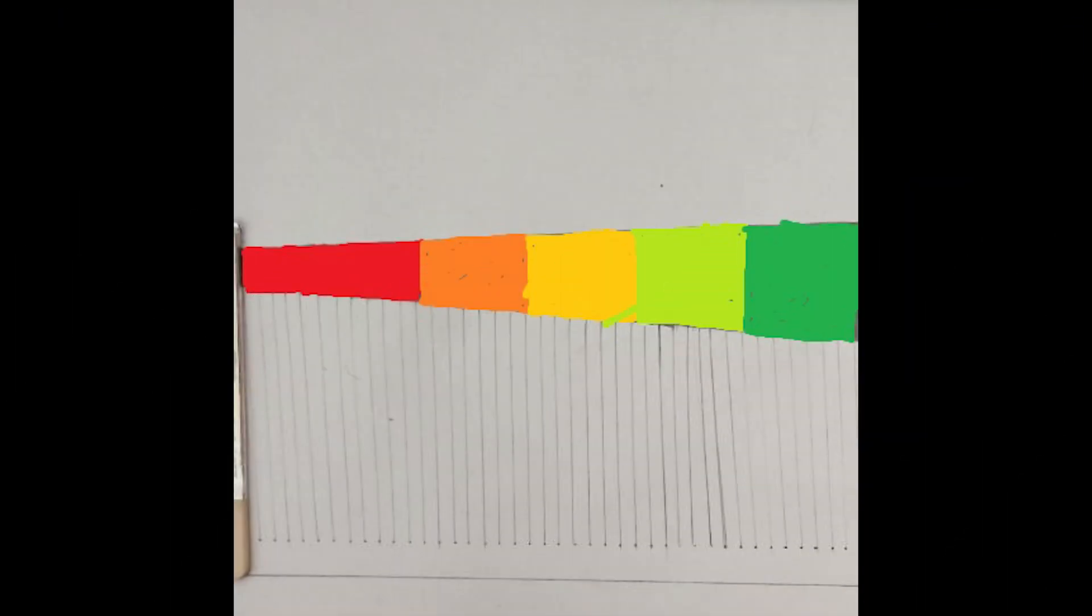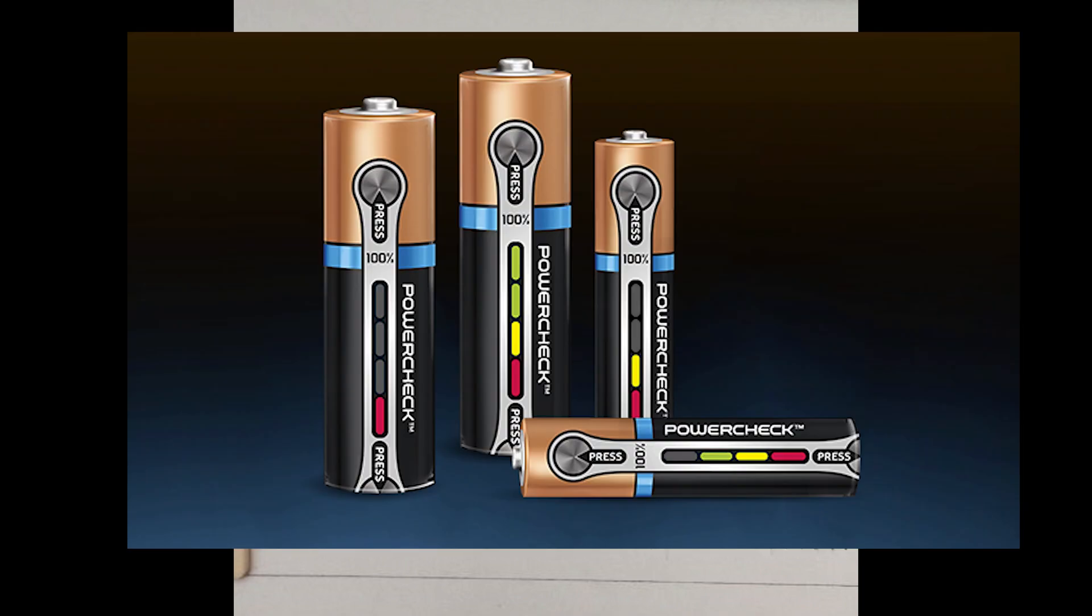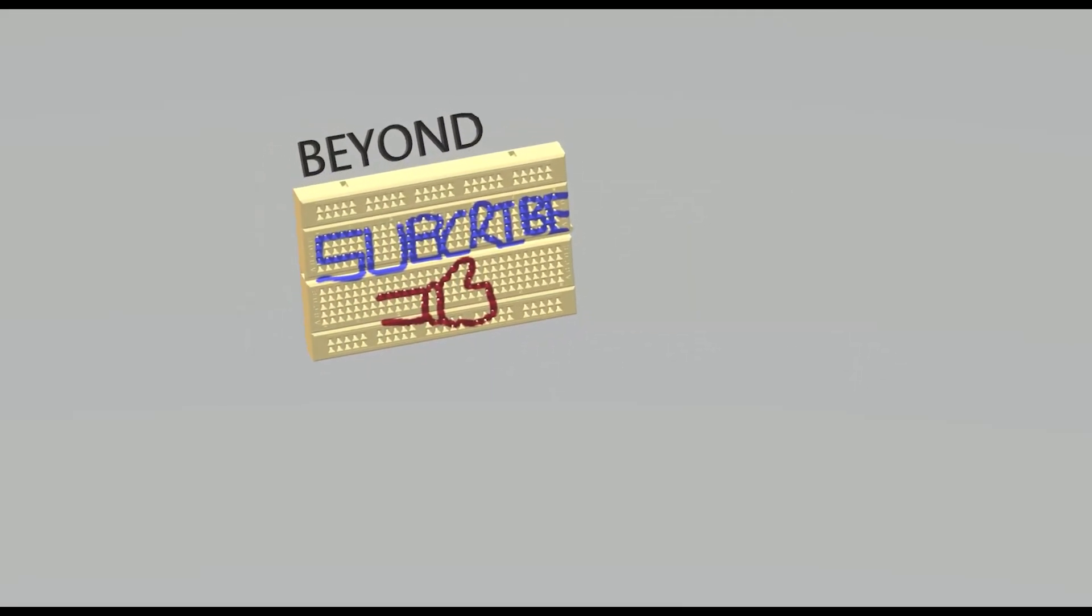So in the tapered resistor, as the resistance per unit length varies along the resistor, there is an interesting temperature profile that is generated, which has a fascinating application. Let's leave that for another video. See you all in my next video. Thank you.